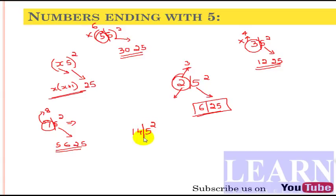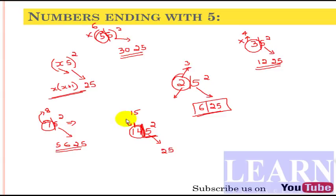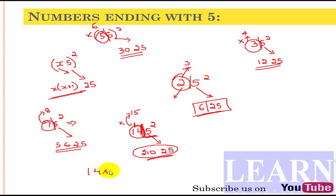Now let's go with 145 squared. Here we should not take the first part as 45 — the last part must be only the single digit 5, giving 25. The remaining part is 14, so we need to multiply 14 by its next number, 15. What is 14 times 15? For this we'll use a short trick.